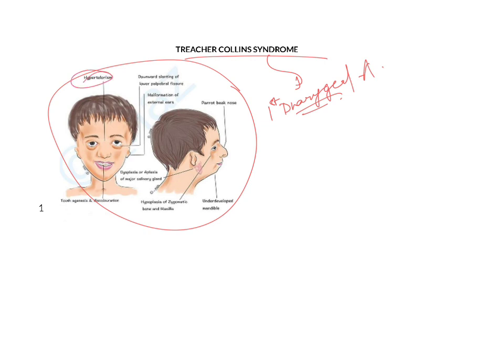Coming to the clinical features of this condition: first is hypertelorism, that is a greater than usual gap between the eyes; then tooth agenesis and discoloration; absent or malformed salivary gland, which could be the parotid gland; and hypoplasia of the zygomatic bone and maxilla.